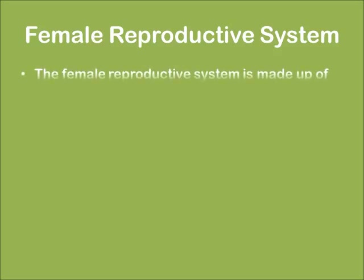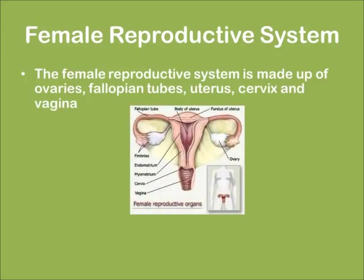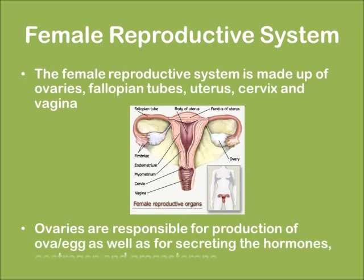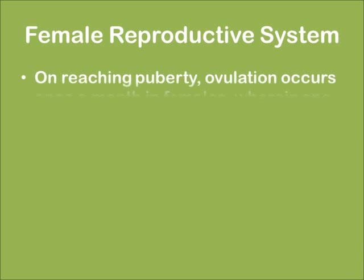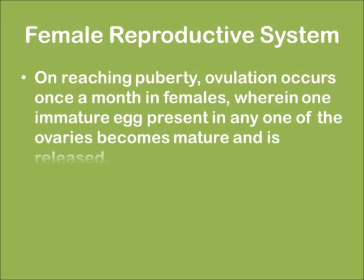The female reproductive system is made of ovaries, fallopian tubes, uterus, cervix, and the vagina. Ovaries are responsible for the production of ova (eggs) as well as for secreting the hormones estrogen and progesterone. On reaching puberty, ovulation occurs once a month in females, wherein one immature egg present in any one of the ovaries becomes mature and is released.